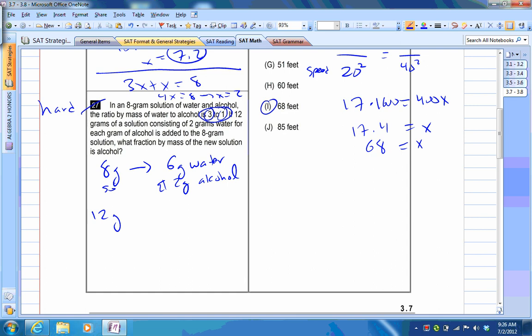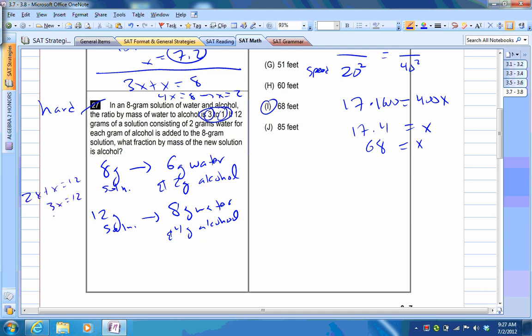For the 12 gram solution, we're going to have 8 grams of water and 4 grams of alcohol. In this case, 2 to 1 ratio, 2x plus x equals 12, 3x equals 12, x equals 4. So you multiply each of these parts by 4.